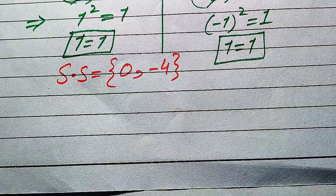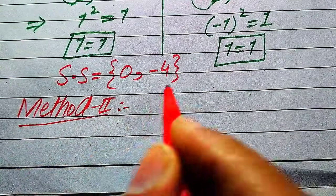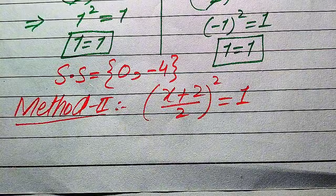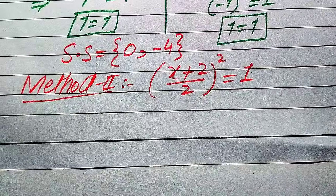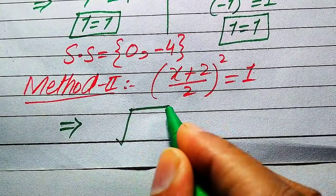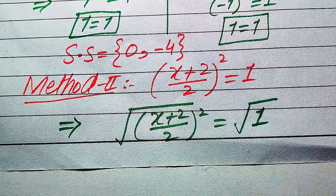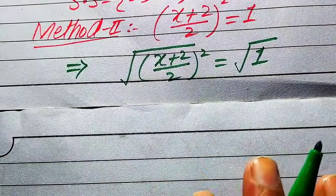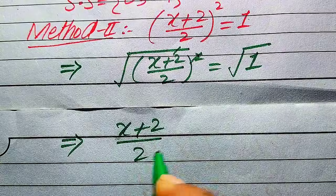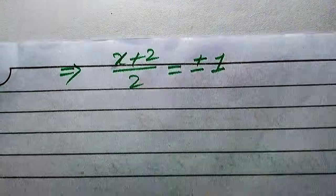Now we solve using the second method. We copy the given equation: (x + 2) / 2, whole squared equals 1. In the second method, we use the square root technique. We apply square root on both sides, writing √[(x + 2)/2]² = √1. The square and square root cancel, and we get (x + 2) / 2 = ±1, since √1 = 1.